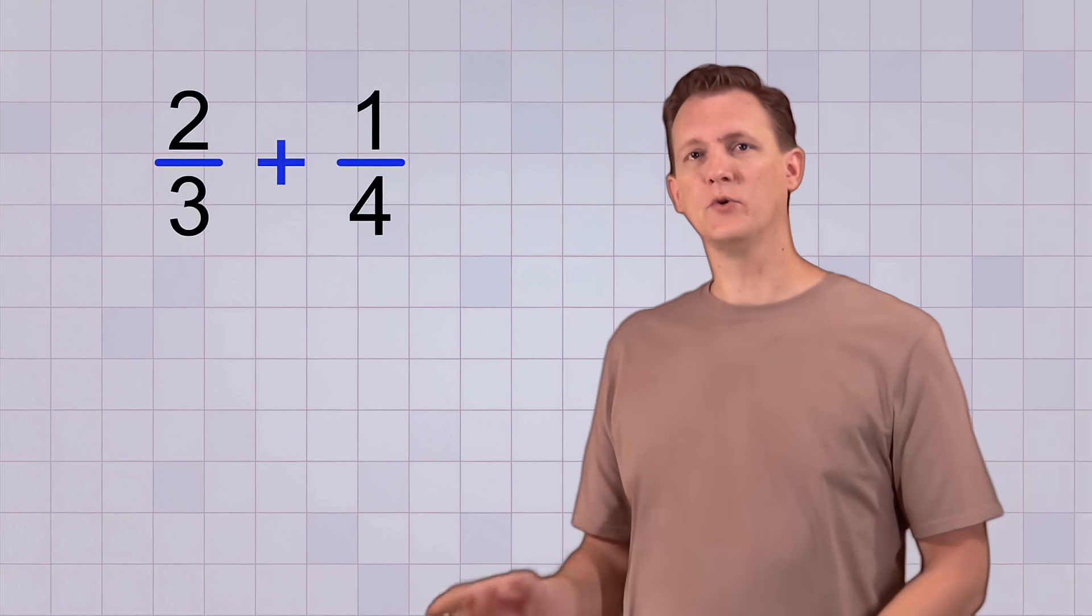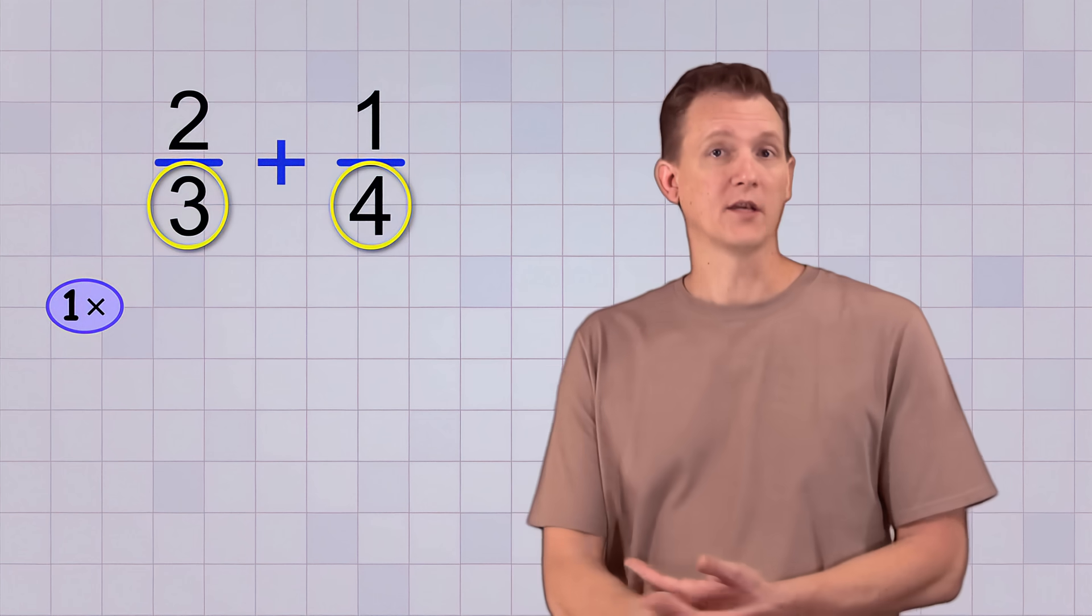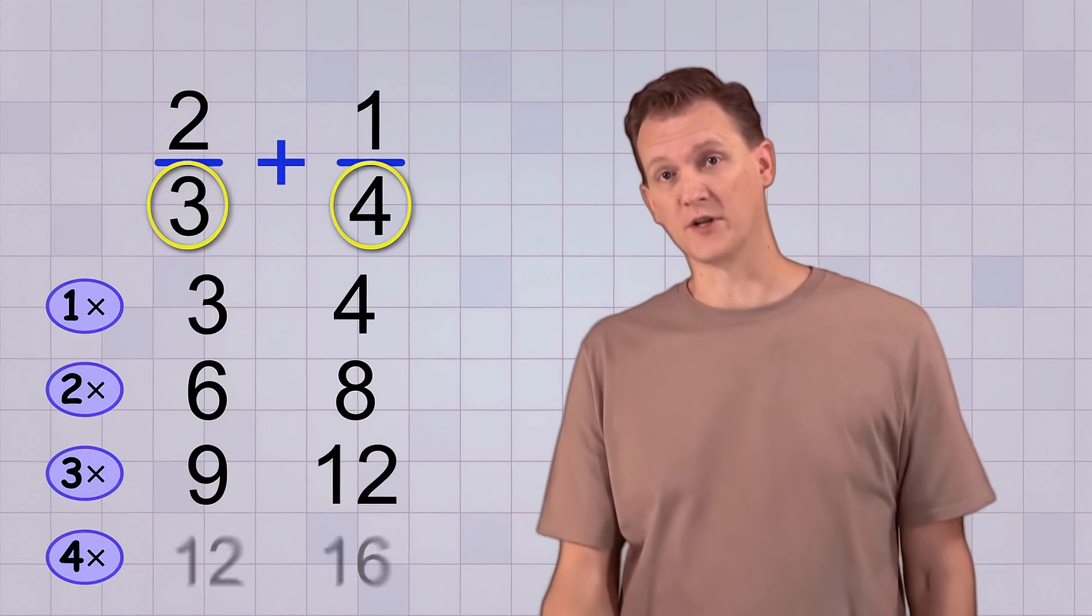First, we'll take the two different bottom numbers and start making multiples of each of them. We start with 1 times the numbers, and then 2 times, and then 3 times, and 4 times, and so on.